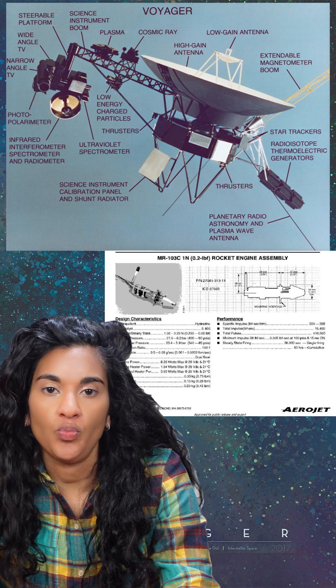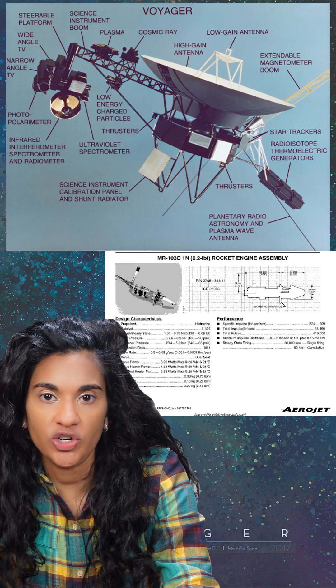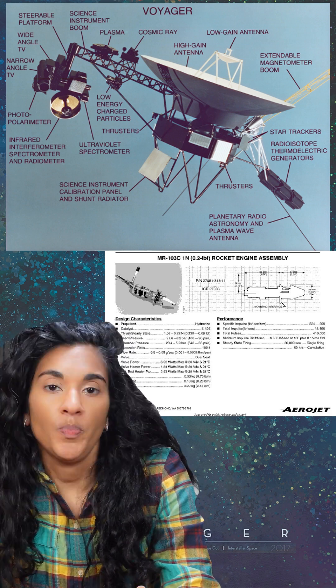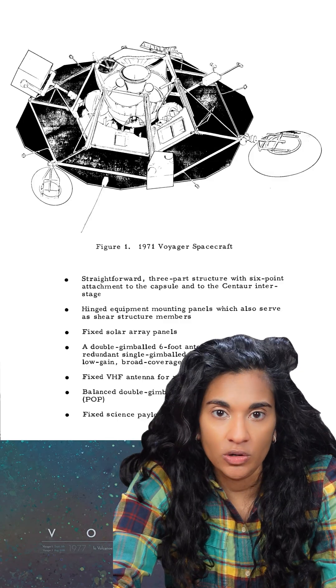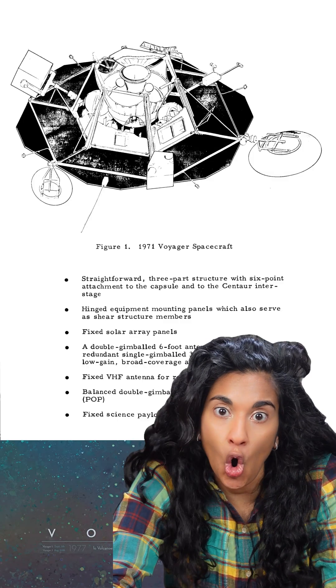Basically, the Voyager 1 team had to program the spacecraft to switch from one set of thrusters to another. But to do this, they had to warm the inactive thrusters first. They hadn't been used since 2017, so they're very, very cold.